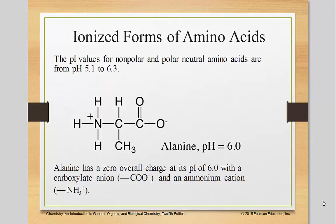The PI values for nonpolar and polar neutral amino acids are ranging from 5.1 to 6.3. Alanine, for example, has a zero overall charge at its PI of 6.0. So that's when it's neutral, at that pH of 6.0. That's the isoelectric point, with a carboxylate ion and an ammonium cation balancing out.